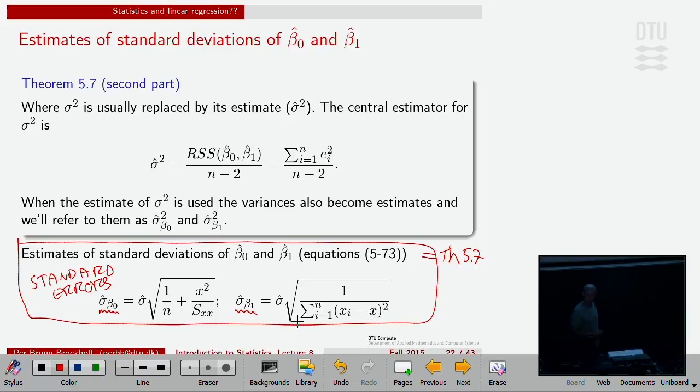The theorem also tells us how to compute an estimate of the underlying variance. The way we compute this number is by taking the sum of all the squared residuals, not dividing by n, not dividing by n minus 1, but dividing by n minus 2.